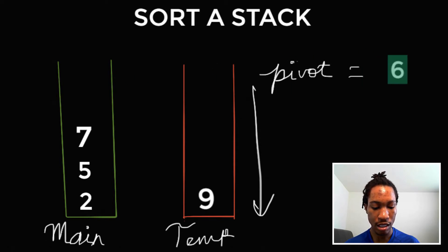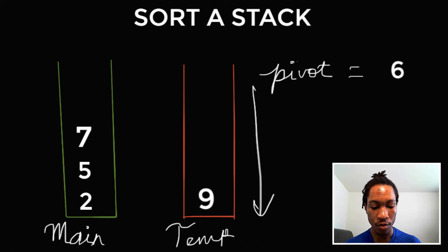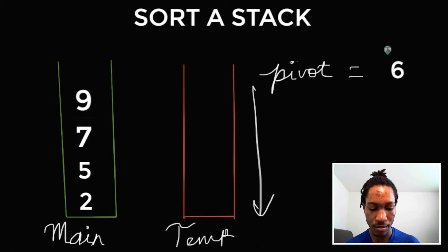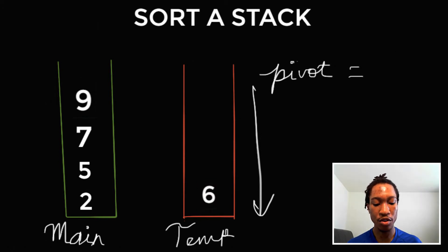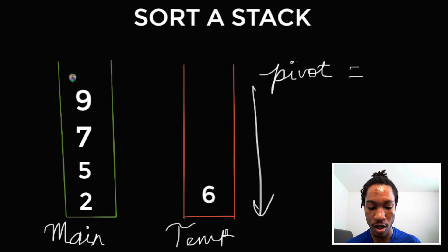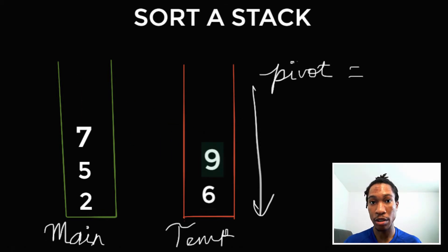Pivot value is 6, so we're going to order the elements in the temporary stack based on this pivot value. We iterate through temp — whenever we get to a number greater than the pivot value, we pop it out and push it into the main stack. We get to 9. 9 is greater than 6, so we pop it out, push it into the main stack, and then push 6, which is smaller than 9, into the temporary stack. After you push the element into the temporary stack, you have to push the elements that you popped back in — so we push 9 back in, since 9 was greater than 6 anyway.